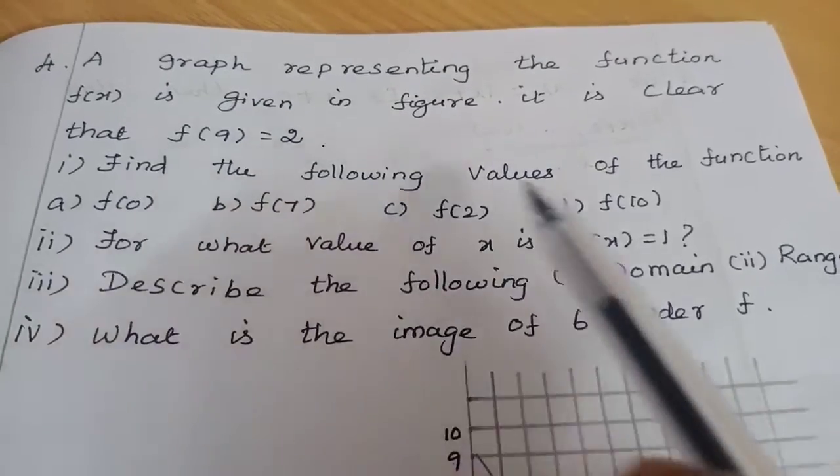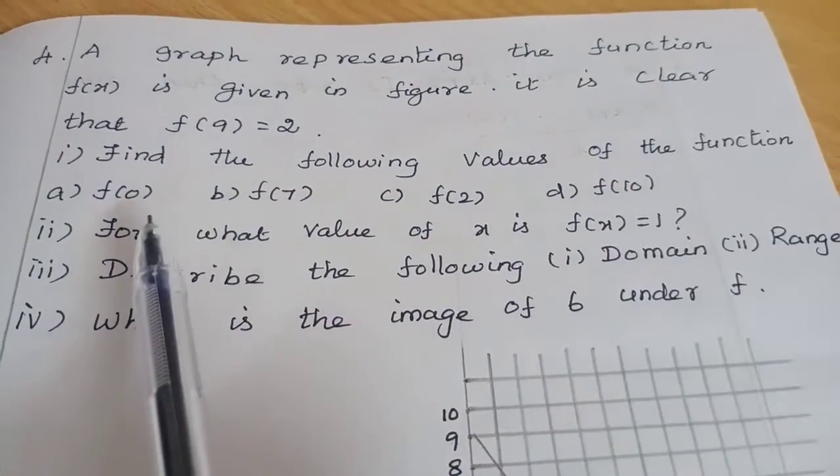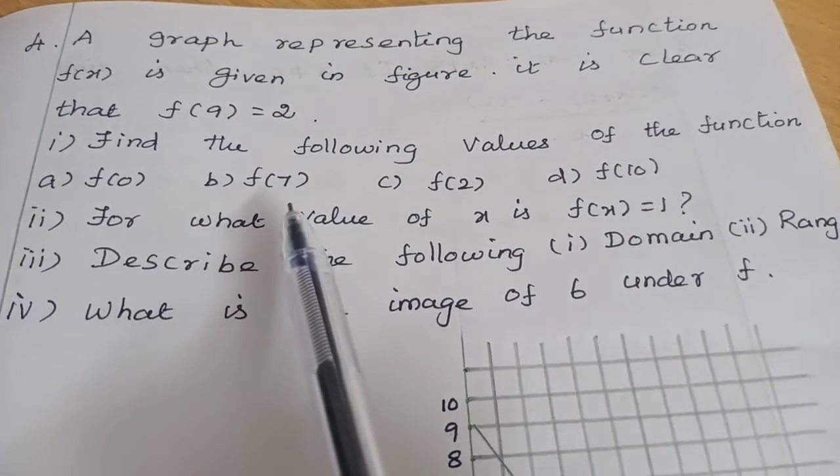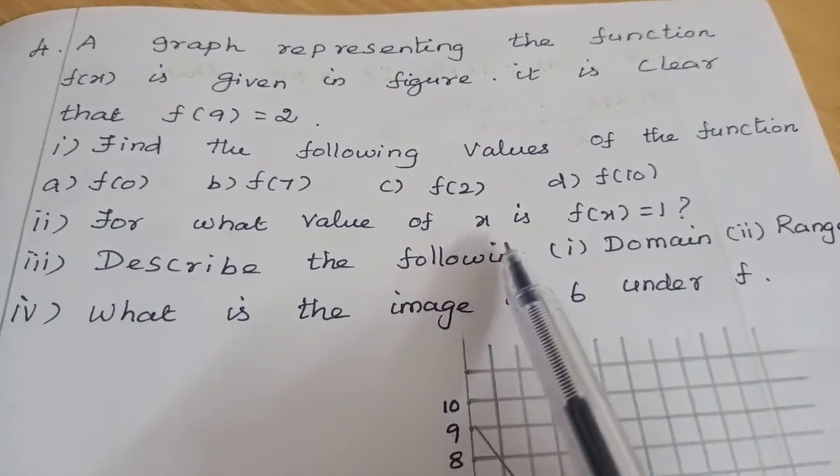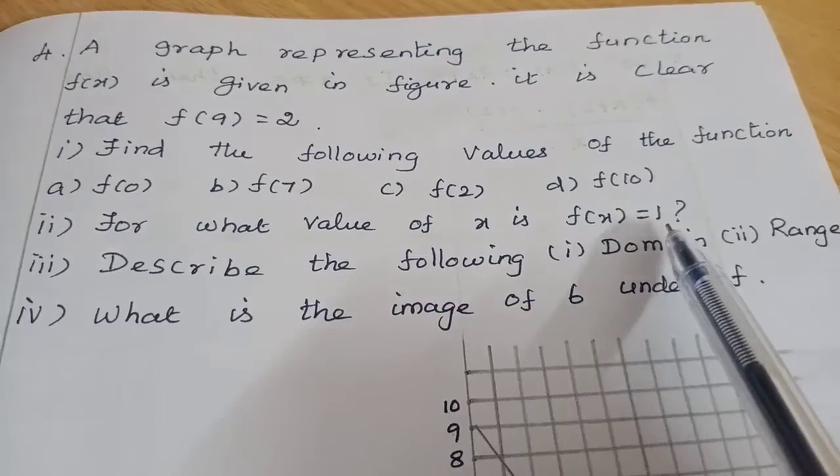Find the following values of the function: a) f(0), b) f(7), c) f(2), d) f(10). For what value of x is f(x) equal to 1?